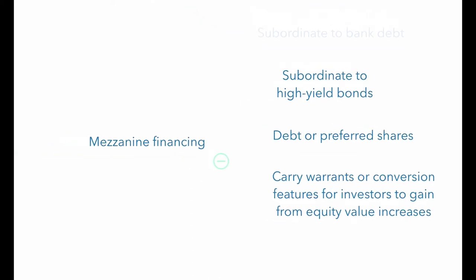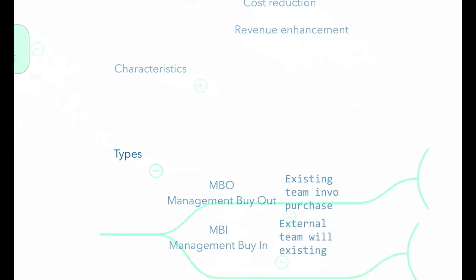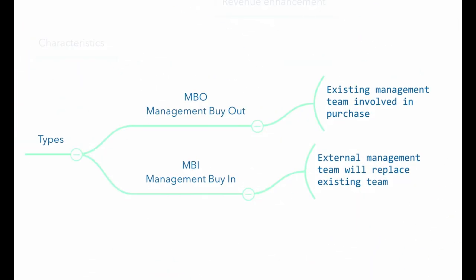There are two types of LBOs: management buyouts, or MBOs, in which the existing management team is involved in the purchase, and management buy-ins, or MBIs, in which an external management team replaces the existing management team.